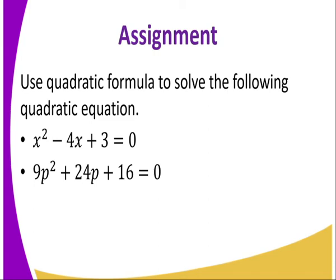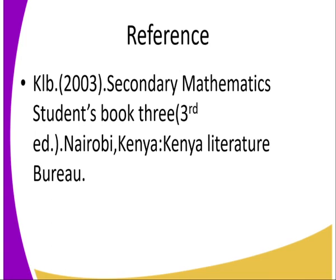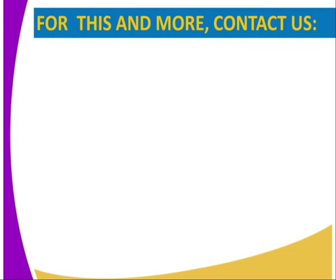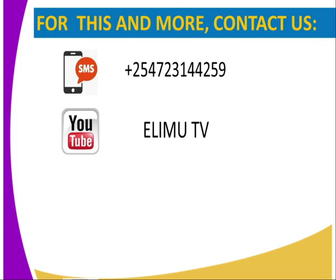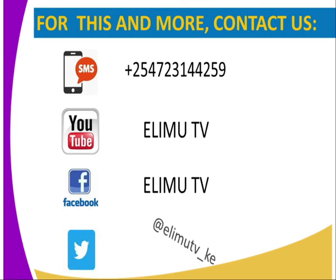The assignment for today: use the quadratic formula to solve (1) x squared minus 4x plus 3 equals zero, and (2) 9p squared plus 24p plus 16 equals zero. For further reference, see the KLB 2003 Secondary Mathematics Student Book 3, third edition. You can contact us via SMS, YouTube, Facebook, or Twitter.